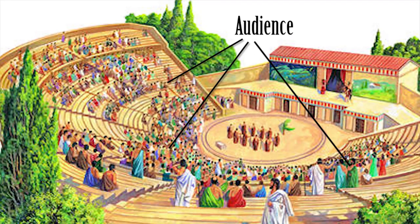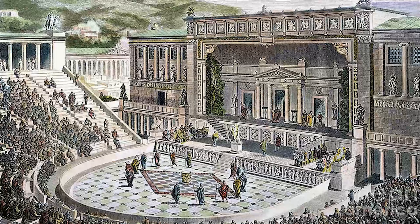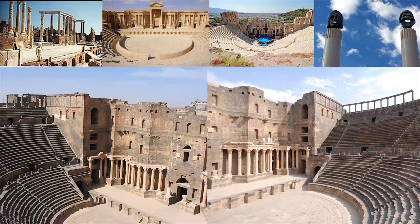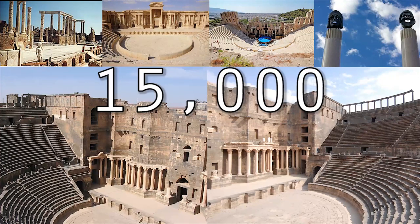The audience sat on rows of stone benches built up on the side of a hollow in a hill, so theatres could not just be built anywhere — they had to be built where the landscape was suitable. A typical theatre could seat 15,000 people. Greek plays involved songs, chant and dance together with musical accompaniment.